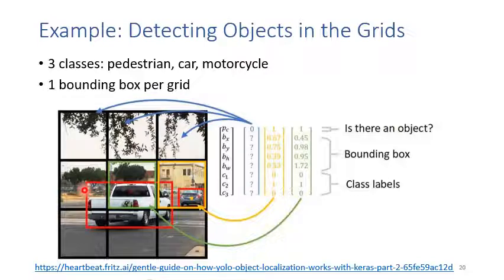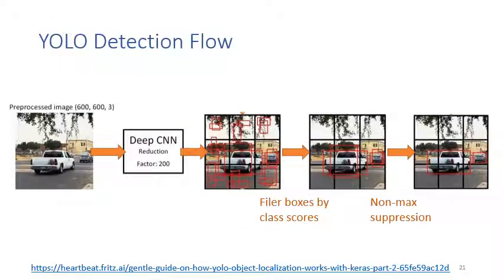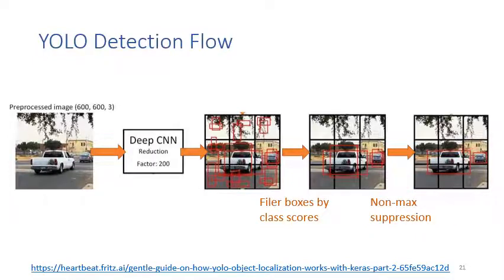In this example, we detect one bounding box per grid. The small green dot is the center of the bounding box, and the yellow dot is also the center. The four numbers show bx, by — the x, y coordinates of the upper-left corner of the bounding box — and bw, bh — the height and width. This is the YOLO detection flow: first extract CNN features, divide the image into 3×3 grids, detect two bounding boxes per cell, filter boxes by class scores, do non-maximal suppression, and get the final detection results.